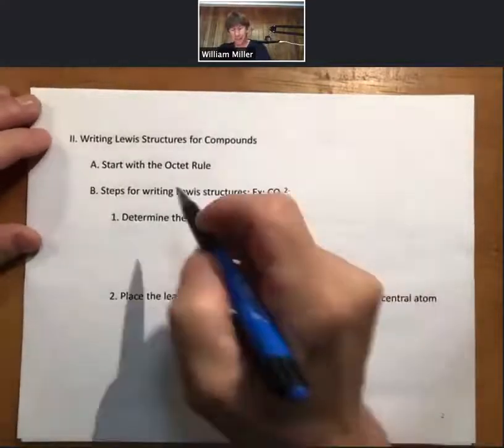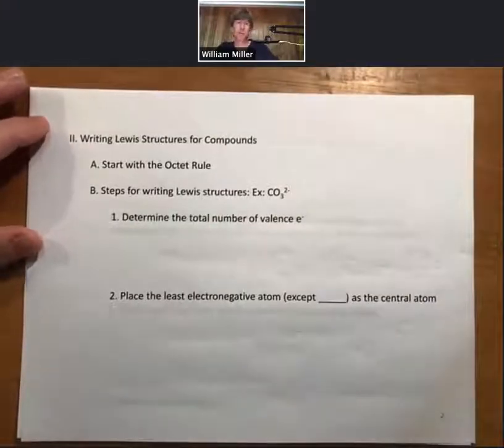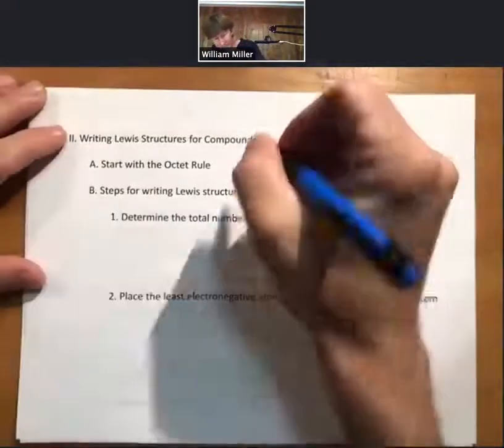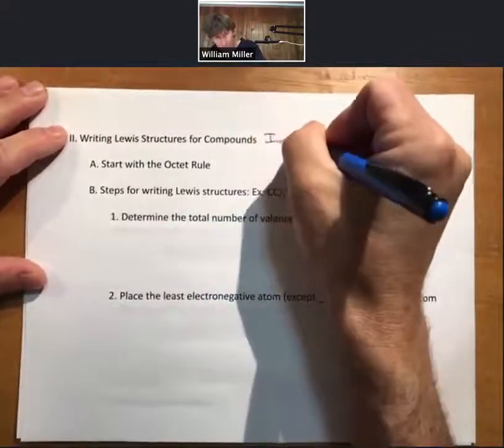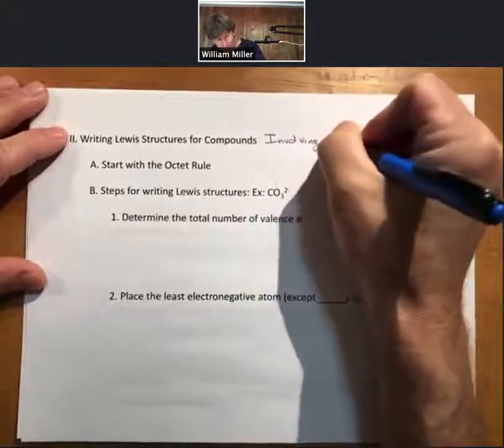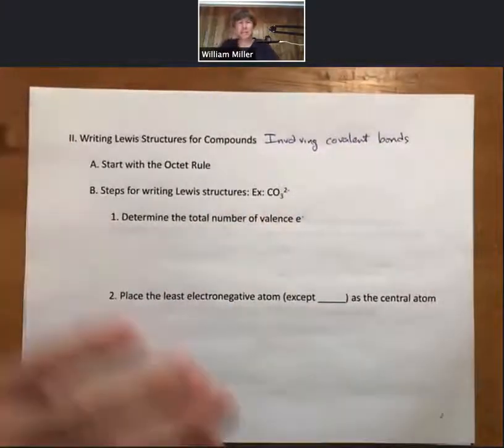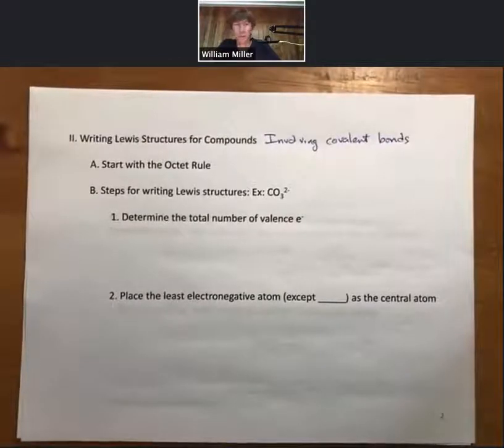I've come up with a set of rules for writing Lewis structures for compounds involving covalent bonds. These involve typically two or more nonmetals sharing electrons, and we'll show you how when you share electrons, you will get the eight that each of the elements wants.